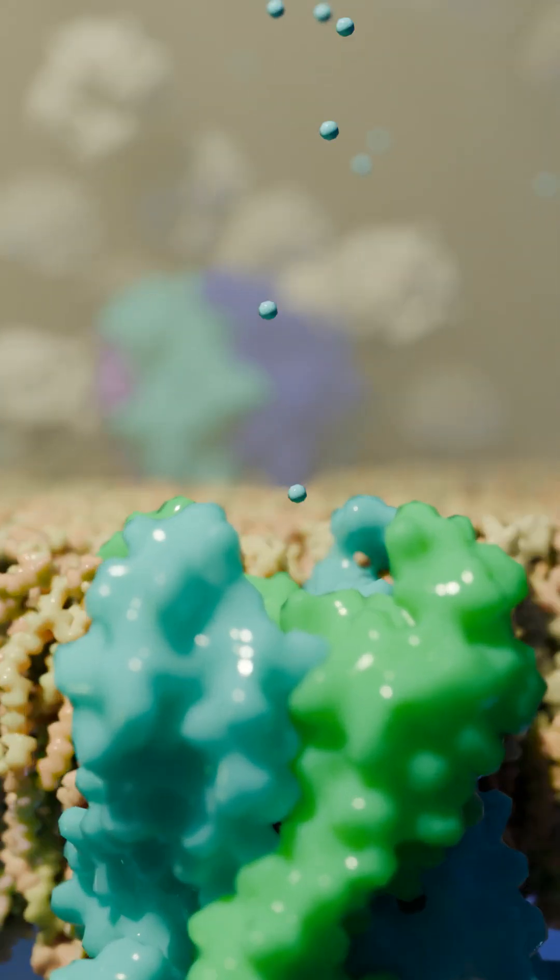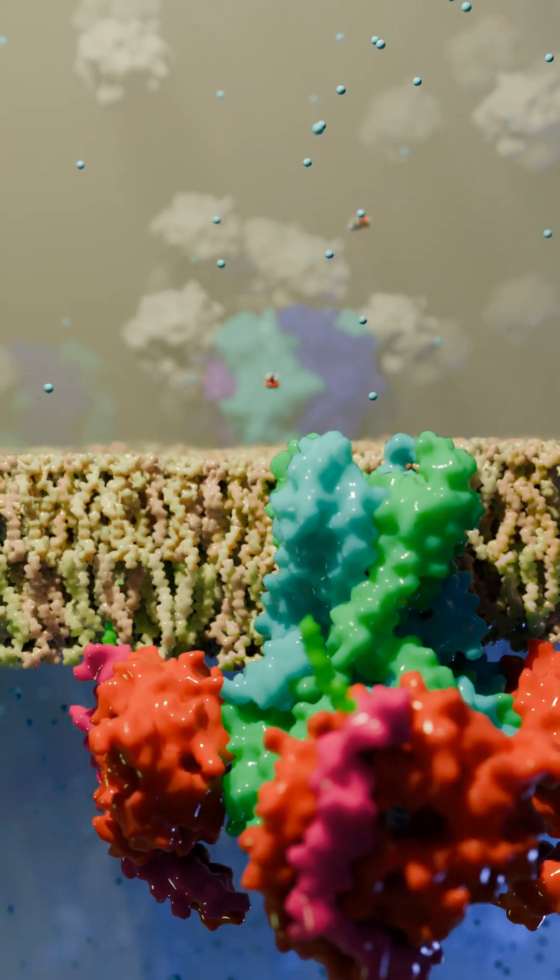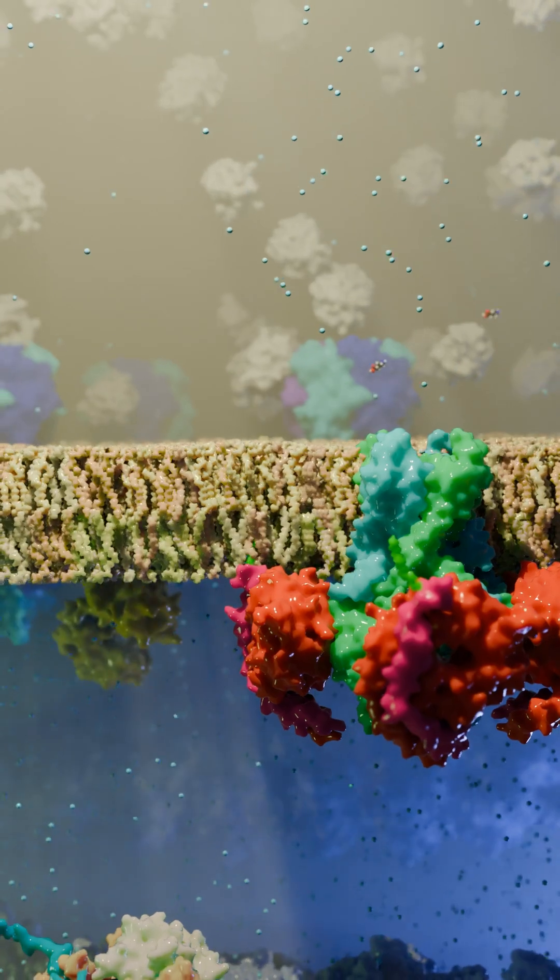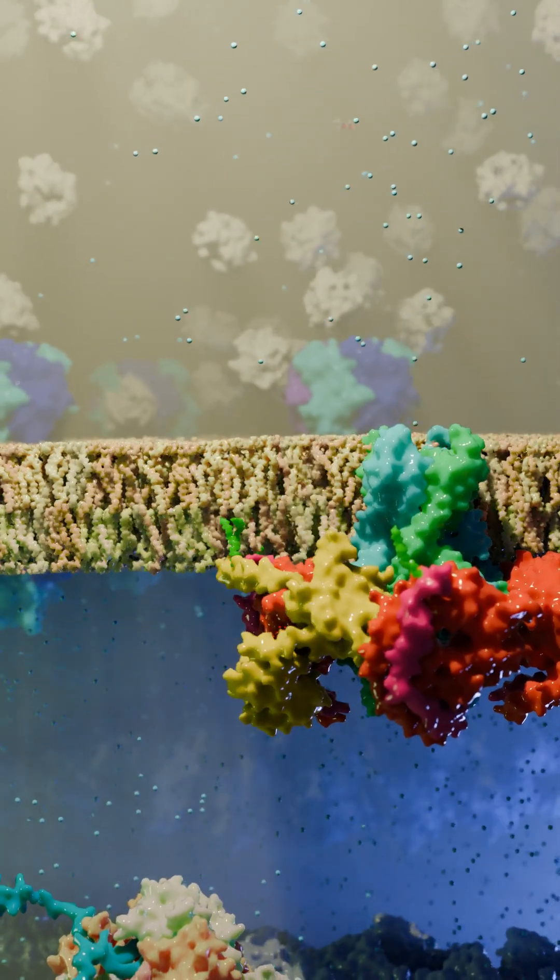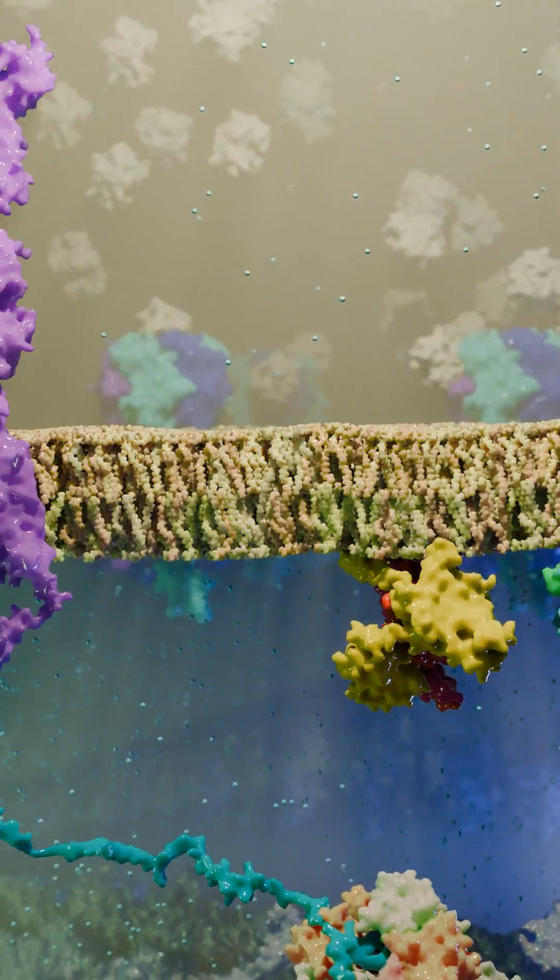Potassium ions can flow out of the cell. The channel is deactivated when G-alpha hydrolyzes its GTP and picks G-beta-gamma back up.